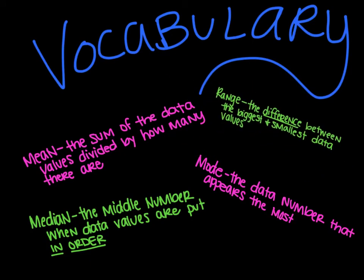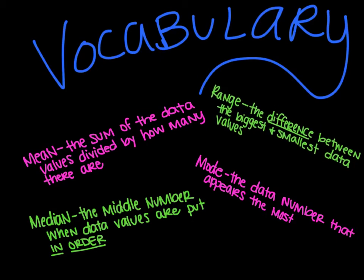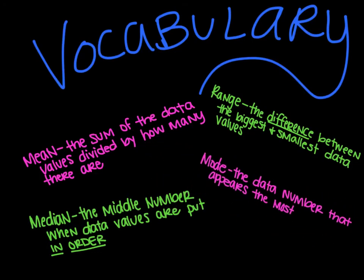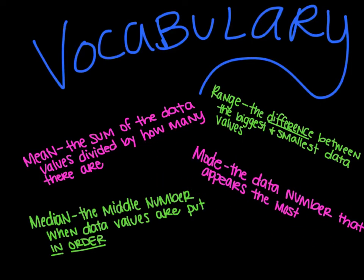Range is the difference between the biggest number and the smallest number. Difference there means subtracting, so you're going to subtract the biggest from the smallest, and that will be your range. Mode is the data number that appears the most, and the helpful hint with that is M-O and M-O, mode and most often.